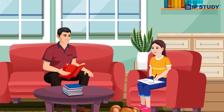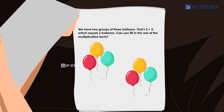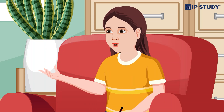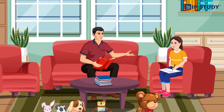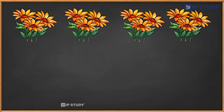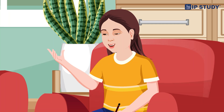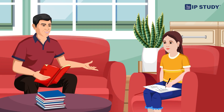Well Urvashi, multiplication is a way of quickly adding numbers together. Let me show you — look at these pictures of groups of the same items. Dad, it is not clear to me. No problem Urvashi. See here, we have four groups of three flowers. This means we have three flowers in each group and we have four groups in total. How many flowers do we have? Three plus three plus three plus three — that's twelve flowers right there.